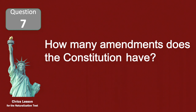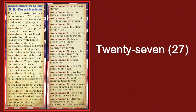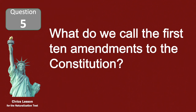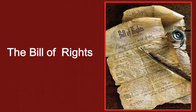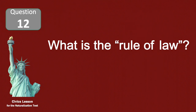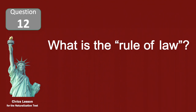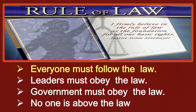How many amendments does the Constitution have? Twenty-seven. What do we call the first ten amendments to the Constitution? The Bill of Rights. What is the rule of law? Everyone must follow the law.